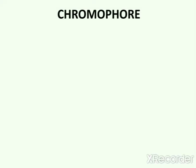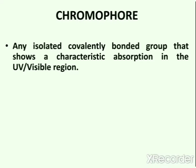So the first term is chromophore. As the name suggests, 'chromo' means color and 'phore' means group. So chromophore represents any group which produces color. But according to a modern definition, any isolated covalently bonded group that shows a characteristic absorption in the ultraviolet or visible region can be called as chromophore.